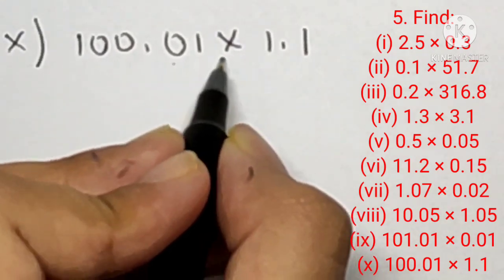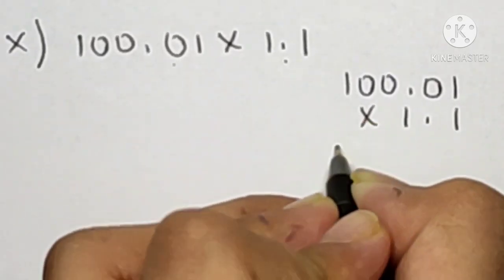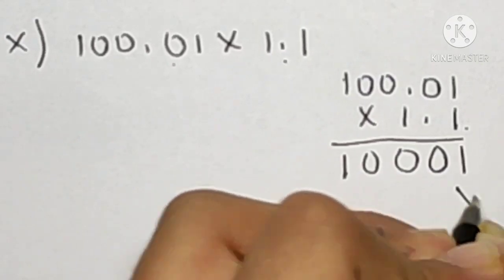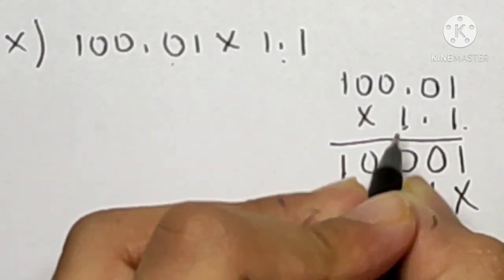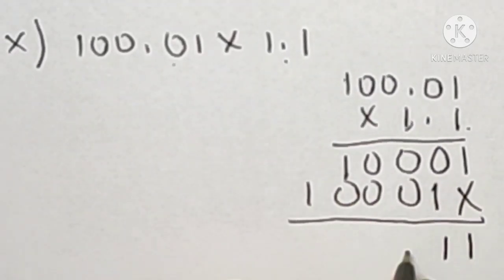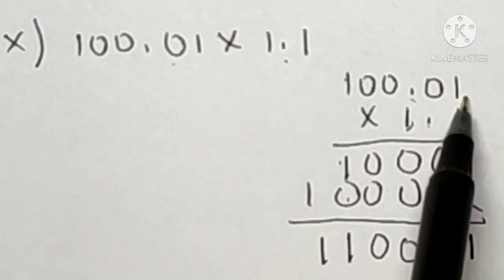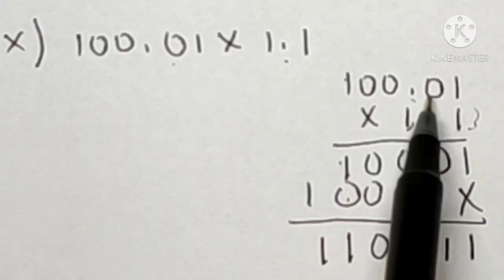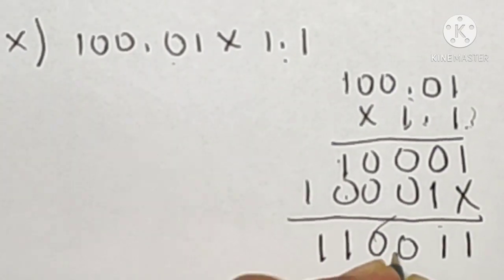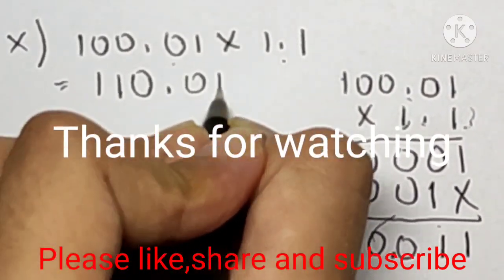Question number five, tenth part is 100.01 into 1.1. Let's multiply: ones are 1, zeros are 0, 0, 1; then ones are 1, zeros are 0, 0, ones are 1. Adding them: 1, 0, 0, 1, 1. There are two decimal points: one is two digits from the last and one is one digit from the last, so 2 plus 1 equals 3 digits from the last. Our answer is 110.011.